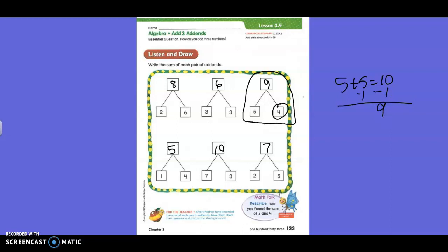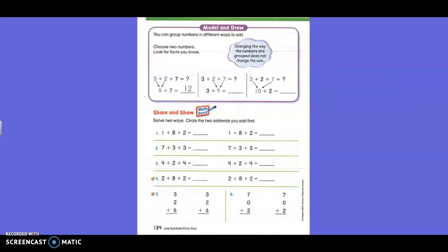Okay. Next page, please. Turn it over. Okay. Let's read the directions at the top of this page. You can group numbers in different ways to add. Choose two numbers. Look for facts you know. Changing the way the numbers are grouped does not change the sum. Okay. So you can see at the very beginning of this problem, right here, they have three plus two plus seven. That's three numbers, isn't it?